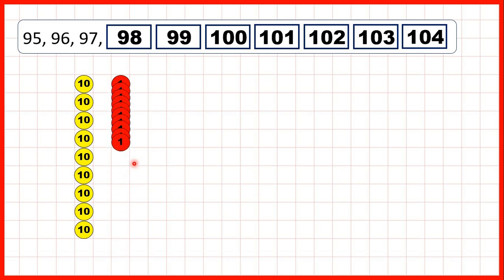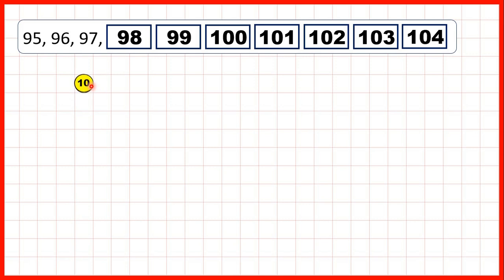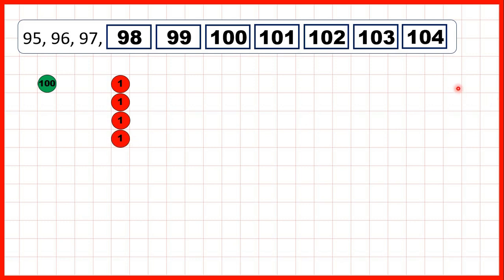We need to exchange those 10 ones for 1 ten. But doing that gives us 10 tens, so we need to exchange those 10 tens for 100. Then we can continue counting in 1s until we get to 104.